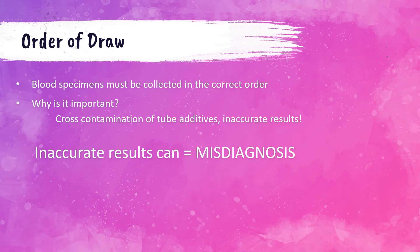Potassium and calcium are not tests that are run on this type of tube, but if this tube's additives contaminate a tube that is used to run potassium and calcium levels, you're going to run into big problems — the potassium will be falsely increased and the calcium level will be falsely decreased. This could lead to a misdiagnosis and have serious consequences if the physician treats the patient based on these inaccurate results. We have to be advocates for the best interest of the patient, and following the order of draw is absolutely imperative for this.